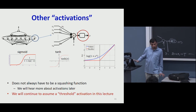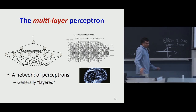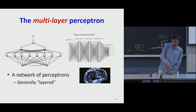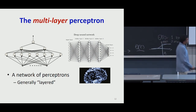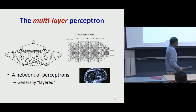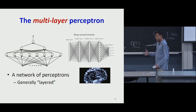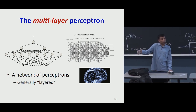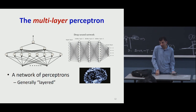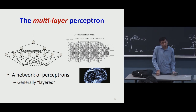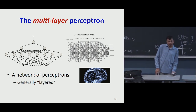So we understand the notion of a perceptron. What is a multi-layer perceptron? It's a network of perceptrons, typically layered. The multi-layer perceptron has a structure with either one input or multiple outputs. We have names for these layers: the outermost layer whose outputs you actually see is called the output layer. All the intermediate variables whose outputs are not really seen — the layers that compute those — are called hidden layers.